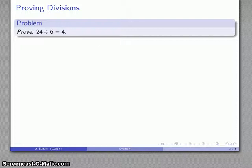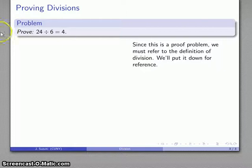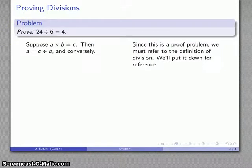So as usual we'll start out by proving a division fact. For example, 24 divided by 6 is equal to 4, and once again this is a proof problem so we'll go back to our definition of division which we'll have for reference.